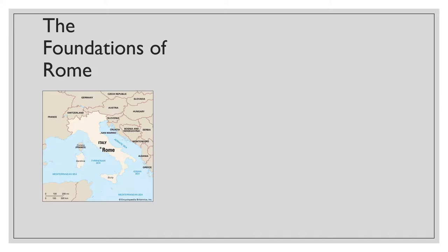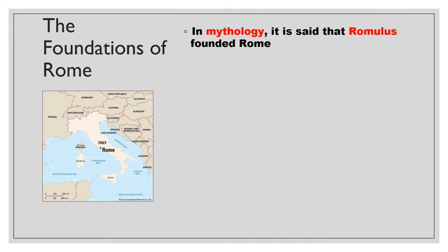Looking at the foundations of Rome, you can see where Rome is on the map there. We're going to specifically be talking about the city of Rome and where it gets its foundations. In mythology, it's said that Romulus founded Rome. This story comes from the myth of Romulus and Remus. They were two brothers who were raised by a wolf, supposedly, and grew up that way. Eventually they fight each other, and Romulus kills Remus and goes on to found the city of Rome.